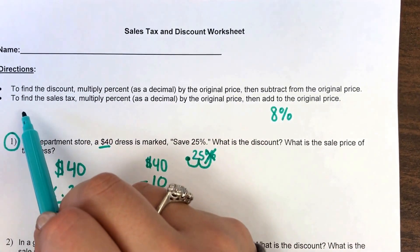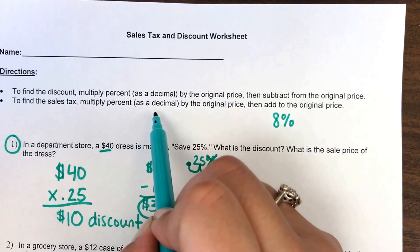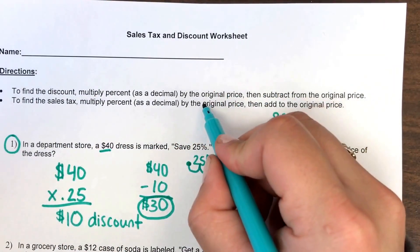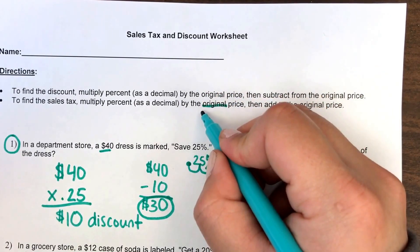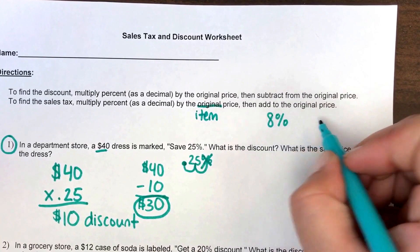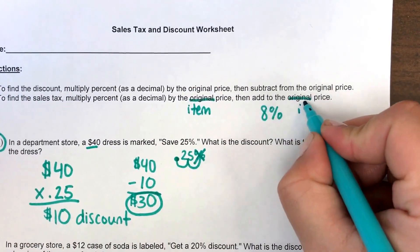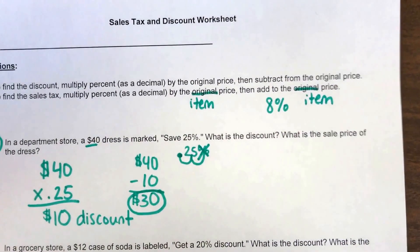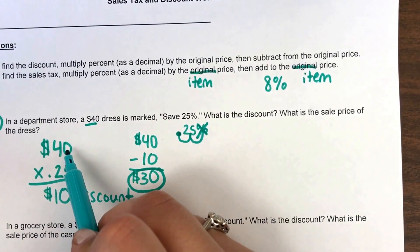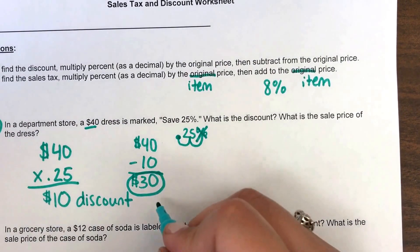The second part says to find the sales tax: multiply the percent as a decimal by the item price, then add it back to the item price. I'm changing 'original price' to 'item price' because you're not going back to $40 — you're using the $30 which is your item price after the discount.